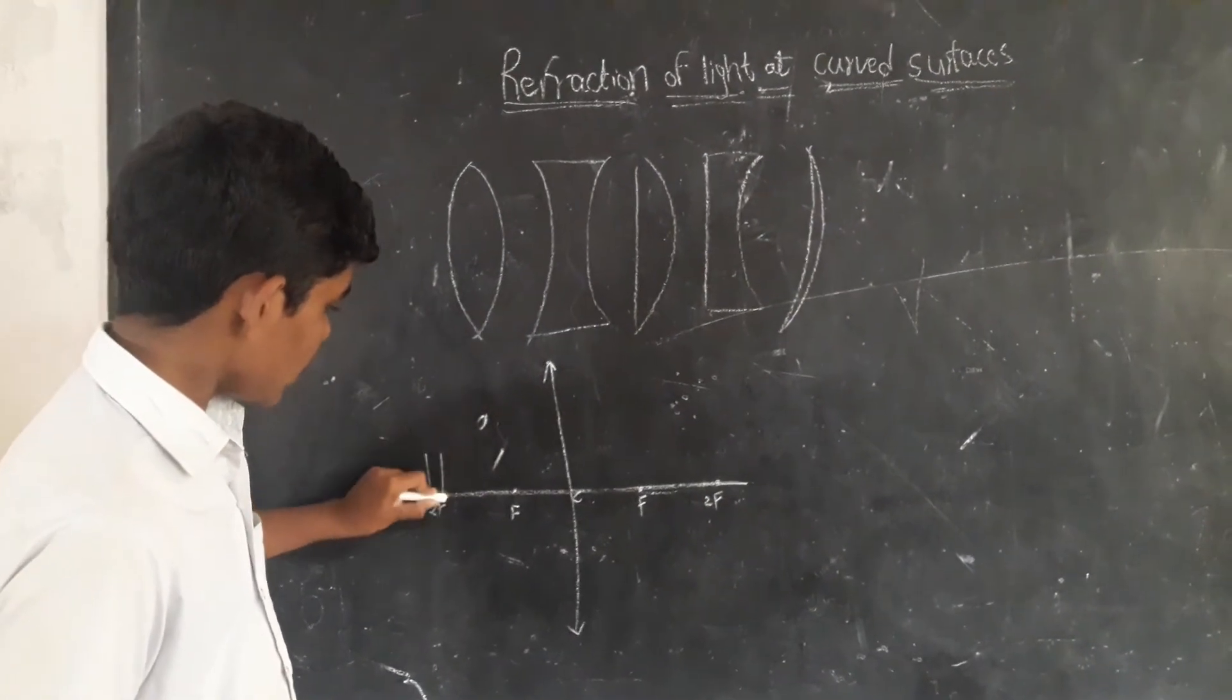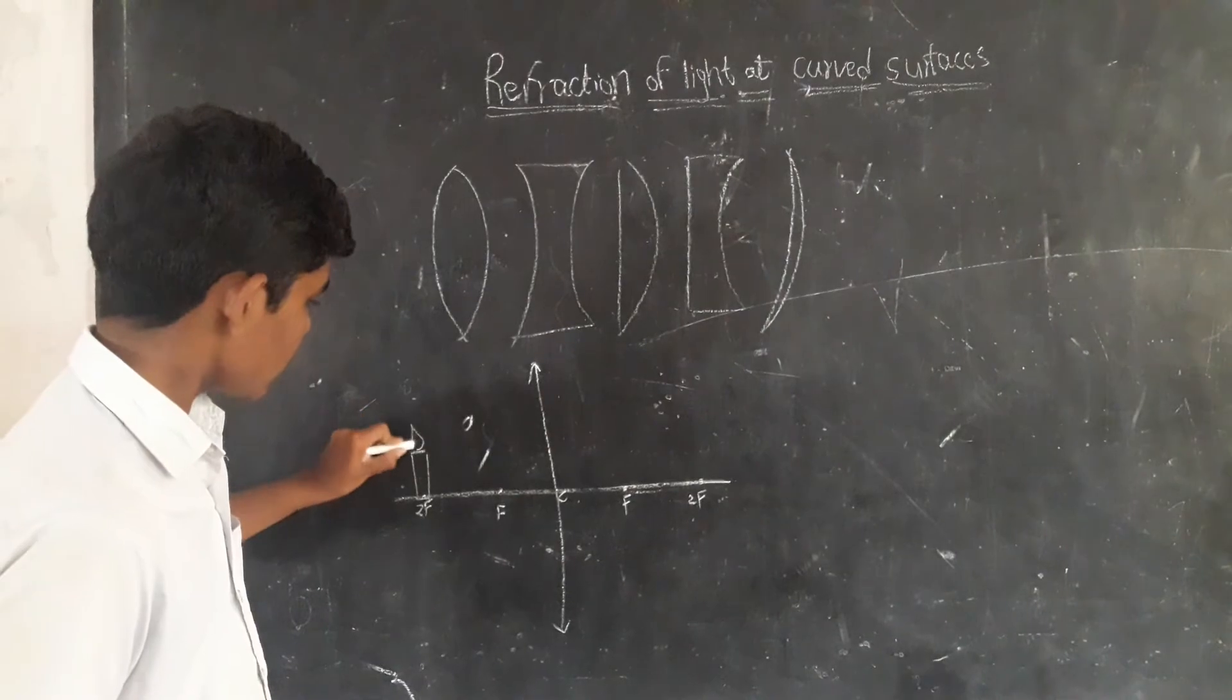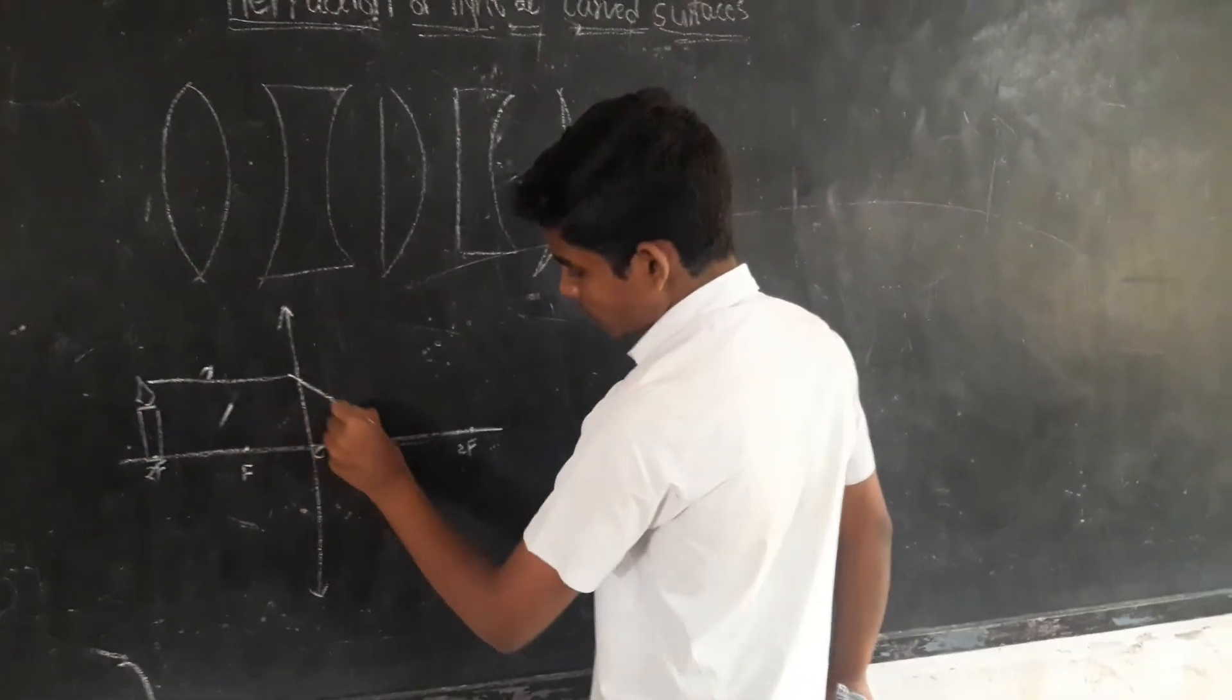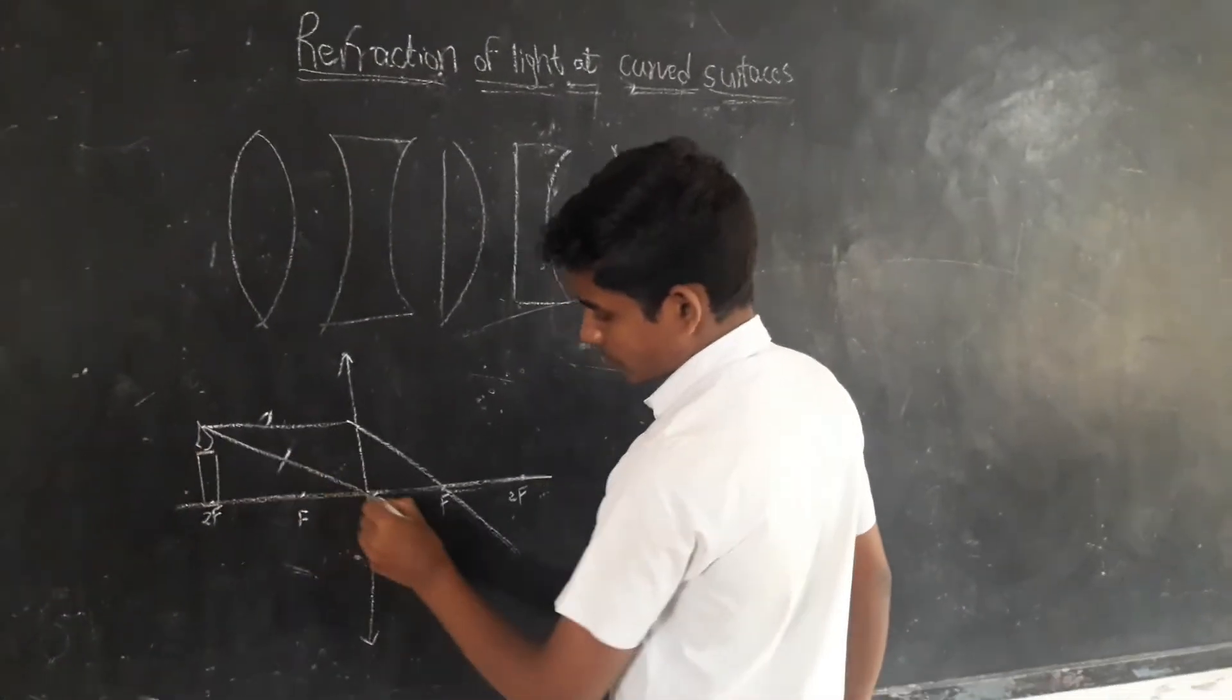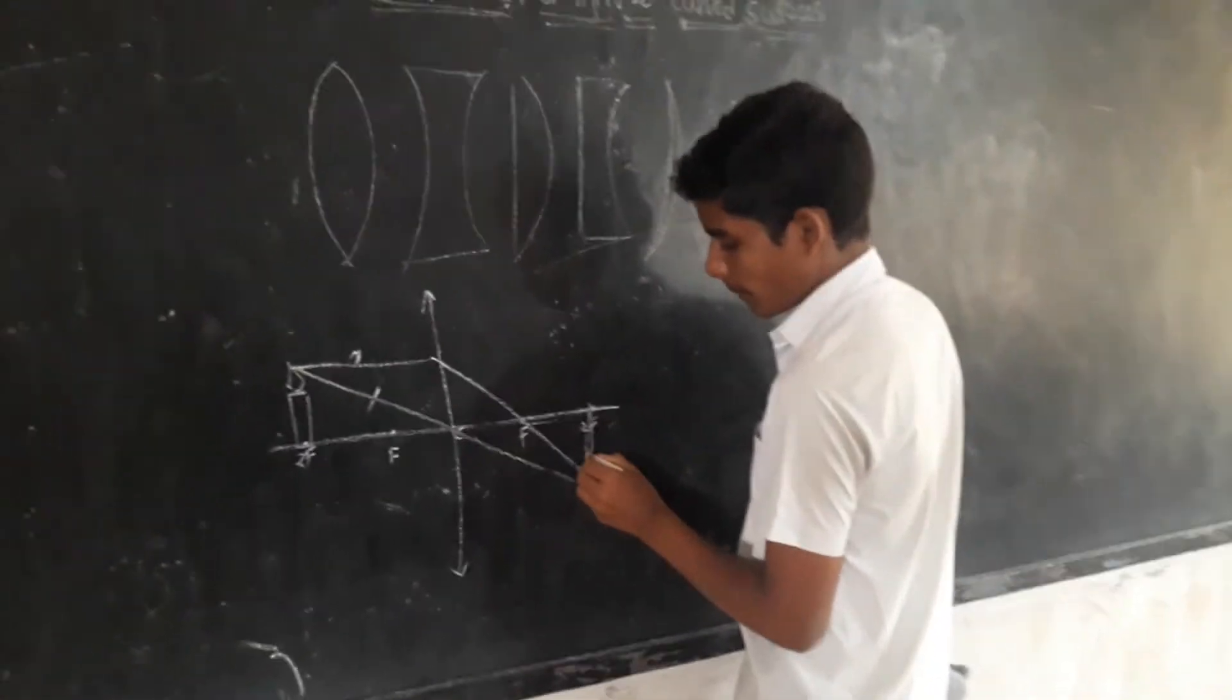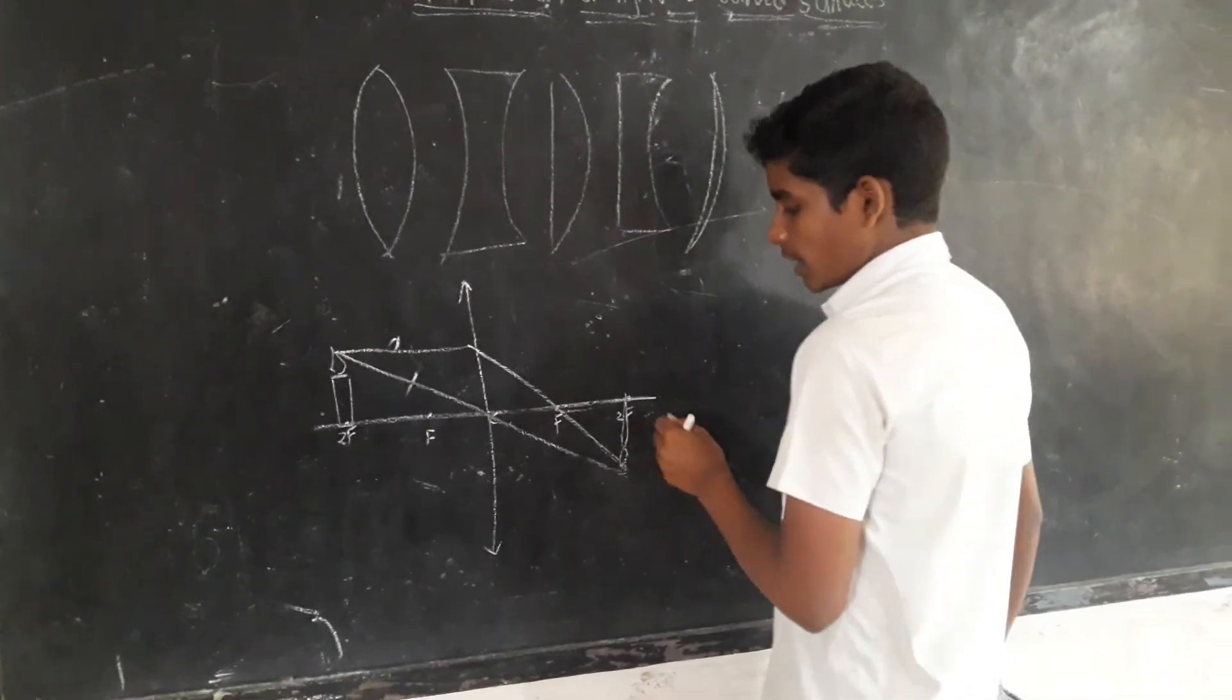Now, object placed at the radius of curvature. The light passes through the focal point. Then image forms at the other radius of curvature.